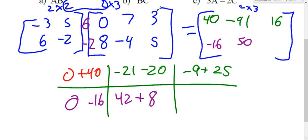6 times 3, negative 2 times 5. That's 18 minus 10. That's 8 in the bottom right. And there's your answer.